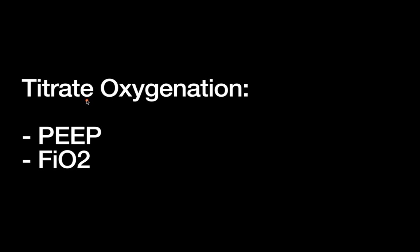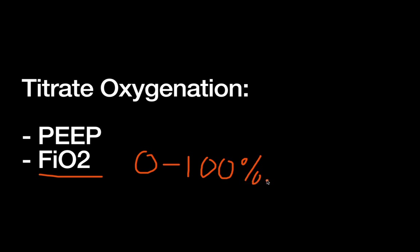When talking about oxygenation, you have two key settings you can change to titrate your level of oxygenation. If it's inadequate and you want to titrate up the ventilator, the obvious one is FiO2, or the fraction of inspired oxygen. This is a number ranging from zero to 100 percent, referring to how much of the gas being pumped into the patient is oxygen. Remember that room air is 21 percent.